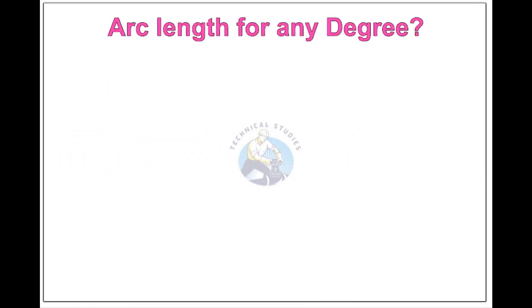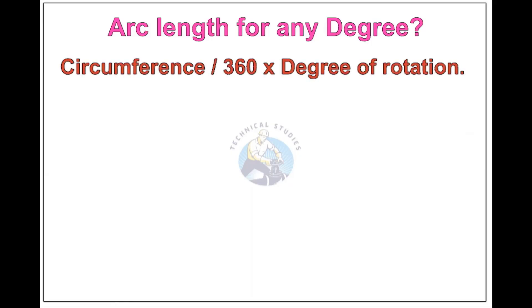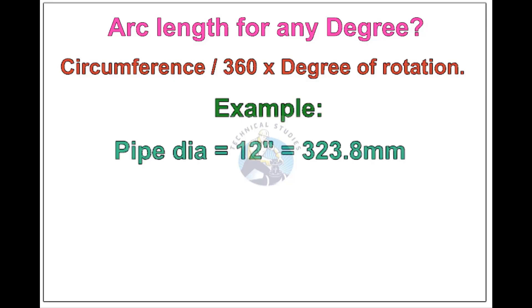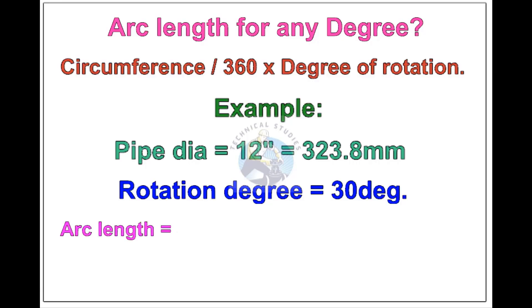Arc length of any degree: Circumference of the pipe divided by 360 into the degree of rotation. Let us check the arc length of 12 inch pipe rotated 30 degree. Apply the formula. The answer is 84.8 millimeters.